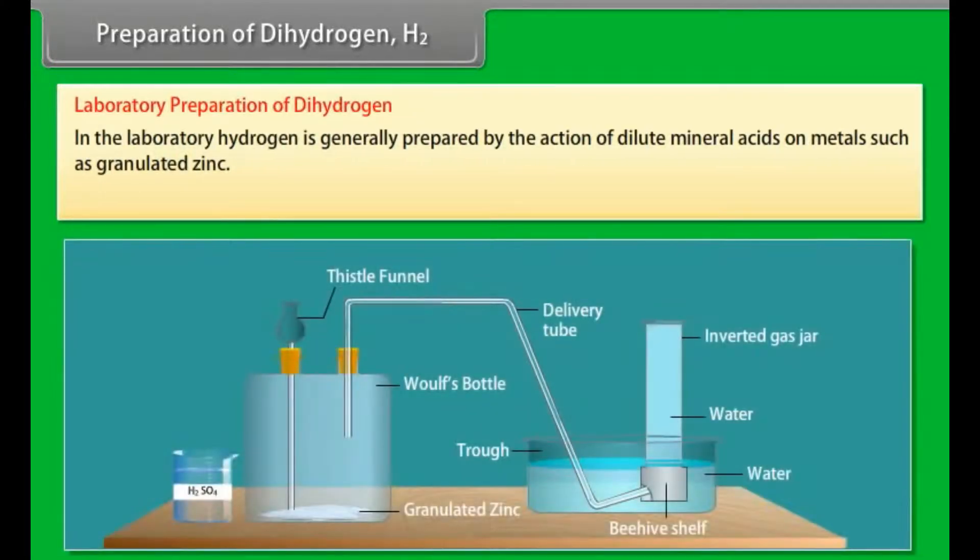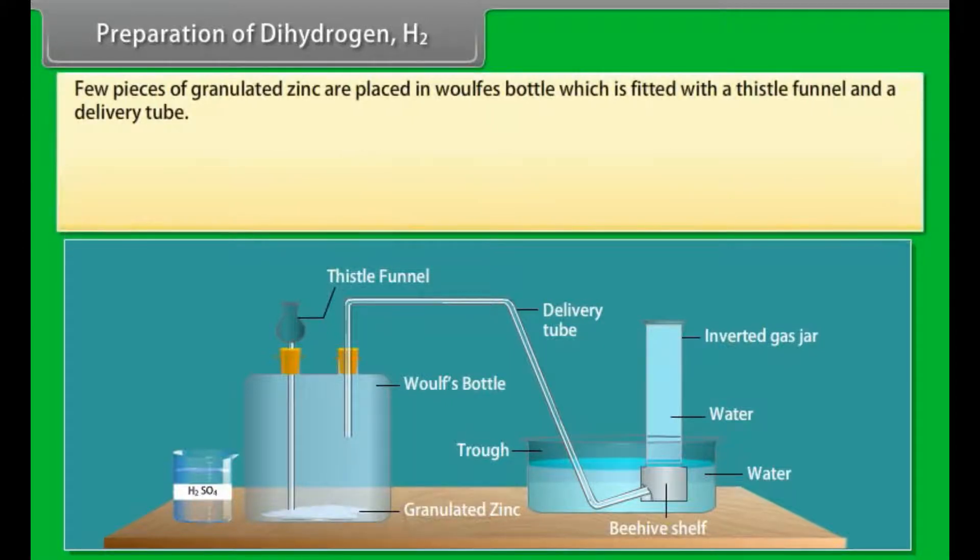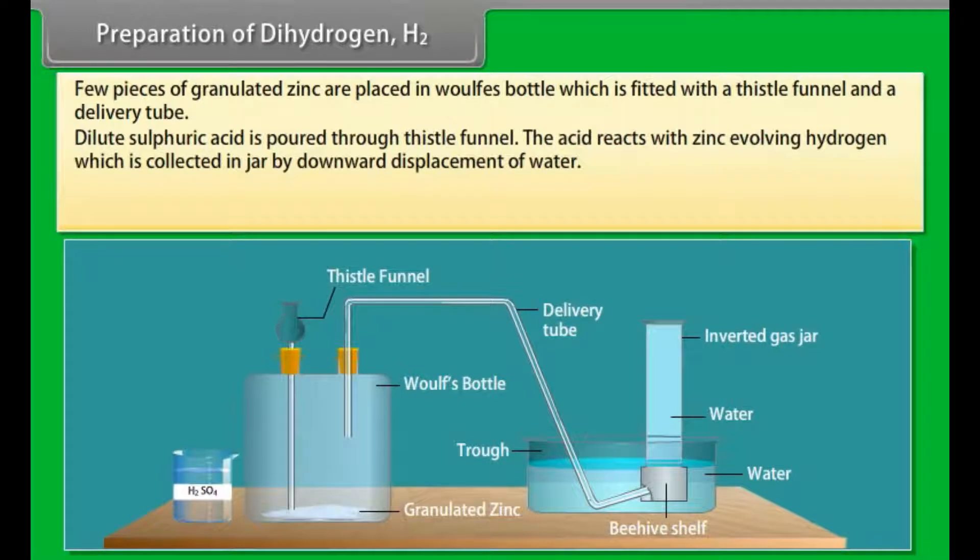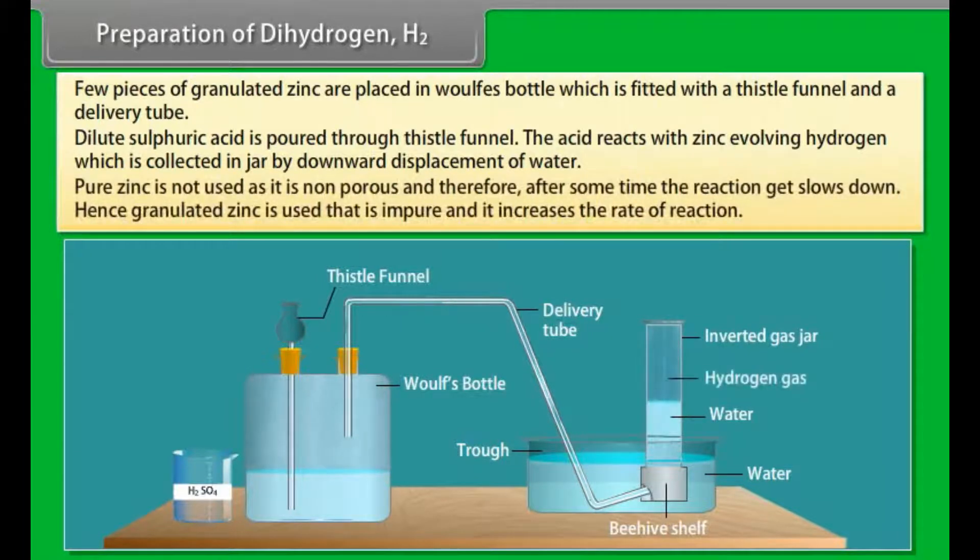In the laboratory, hydrogen is generally prepared by the action of dilute mineral acids on metals such as granulated zinc. Few pieces of granulated zinc are placed in a flask which is fitted with a thistle funnel and a delivery tube. Dilute sulphuric acid is poured through thistle funnel. The acid reacts with zinc, evolving hydrogen, which is collected in jar by downward displacement of water. Pure zinc is not used as it is non-porous and therefore, after some time, the reaction slows down. Hence, granulated zinc is used that is impure and it increases the rate of reaction.